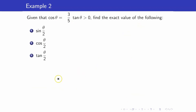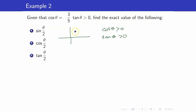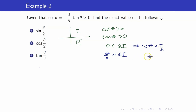Next, we are given that cosine theta equals 3/5 and tangent theta is positive. We want to find the exact values of sine, cosine, and tangent of theta over 2. Since the half-angle formulas involve plus or minus, we must first determine the quadrant of theta over 2. Cosine theta is positive in quadrants 1 and 4, and tangent theta is positive, so theta is in quadrant 1. This means theta is between 0 and pi over 2, and dividing by 2, theta over 2 is between 0 and pi over 4 — also in quadrant 1.